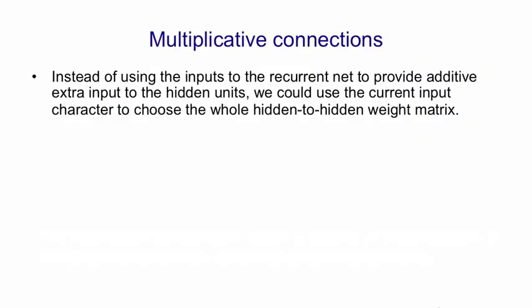So we're going to try and capture that by using multiplicative connections. Instead of using the character inputs to the recurrent net to give extra additive input to the hidden units, we're going to use those characters to swap in a whole hidden to hidden weight matrix. The character is going to determine the transition matrix.